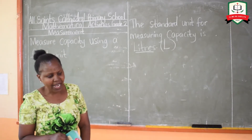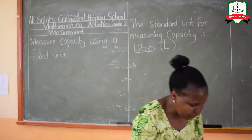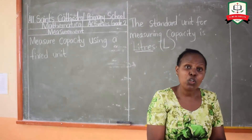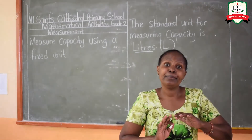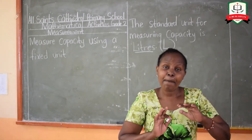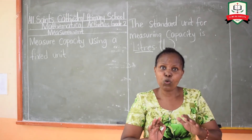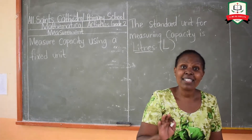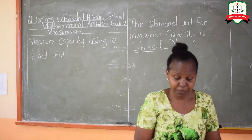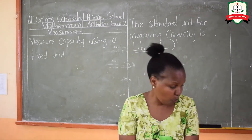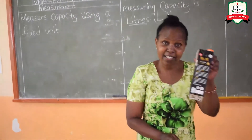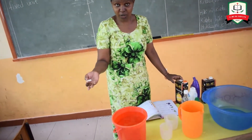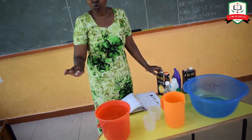There are so many items found in your house that are measured in liters. Most things measured in capacity are in liquid form — like water, juice, milk, and oil. Cooking oil is measured in liters — you can discover that at home by going to your kitchen and checking for yourself.